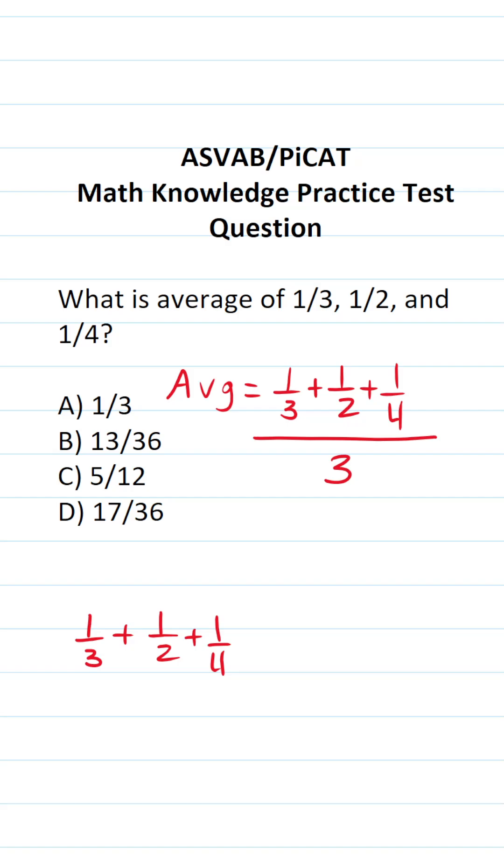In order to add fractions they have to have the same or common denominator. In this case we have a denominator of three, two, and four. Well as it happens, three, two, and four all go into twelve. So twelve is going to be our common denominator. So let's go ahead and rewrite all these with the denominator of twelve.